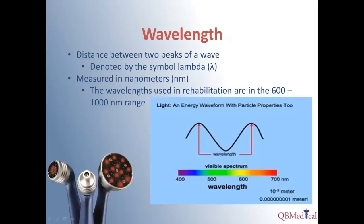Wavelength is one of the key defining characteristics of laser energy. Light travels in waves, so the wavelength is the distance between two peaks or one iteration of a wave, measured in nanometers and denoted by the symbol lambda. Wavelength is important in therapy because it determines the depth of penetration. In therapeutic purposes, lasers are typically in the 600 to 1,000 nanometer range, putting them in the red to near-infrared portion of the electromagnetic spectrum.